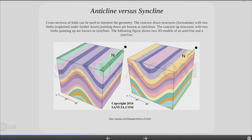Anticline versus syncline. In structural geology an anticline is a type of fold that is an arc-style shape and has its oldest beds at its core. A typical anticline is convex up, in which the hinge or crest is the location where the curvature is greatest and the limbs are the sides of the fold that dip away from the hinge. A syncline is a fold with younger layers closer to the center of the structure.